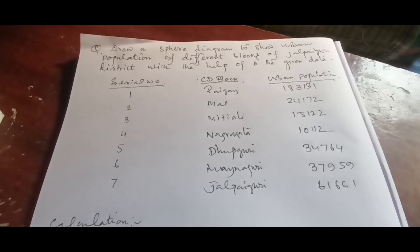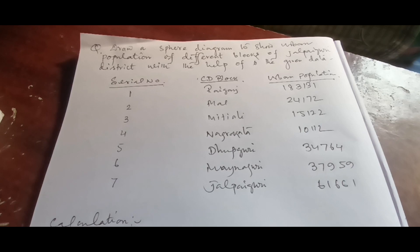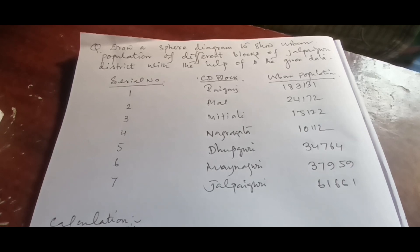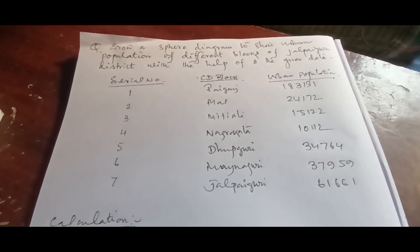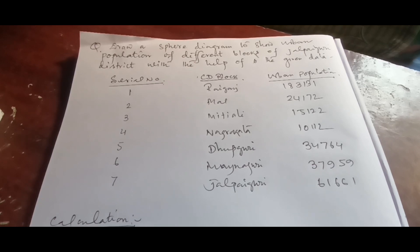Hello everyone, welcome to Geography Mediji. Today we are back with another video about cartogram, specifically sphere diagrams and how to draw them. The question says draw a sphere diagram to show urban population of different blocks of Jalpaiguri district with the help of the given data.